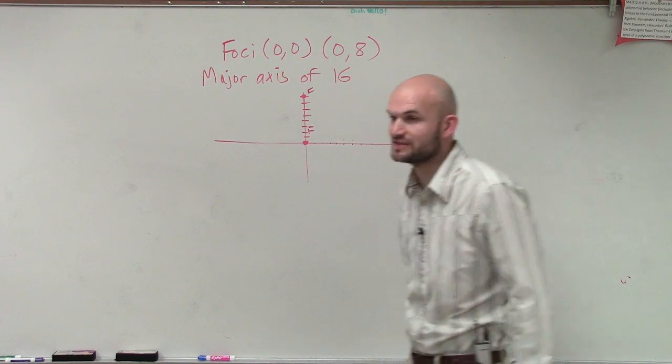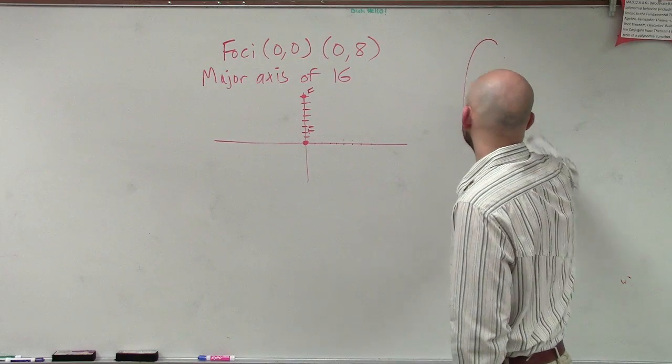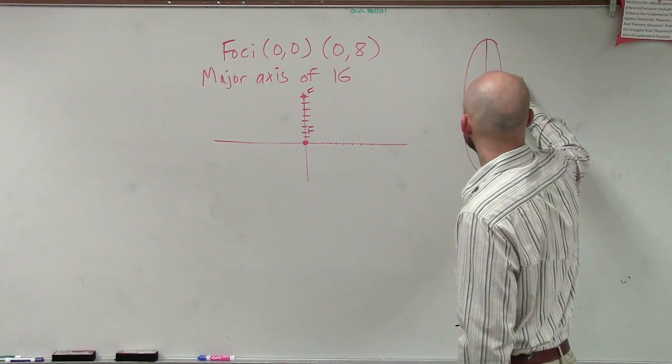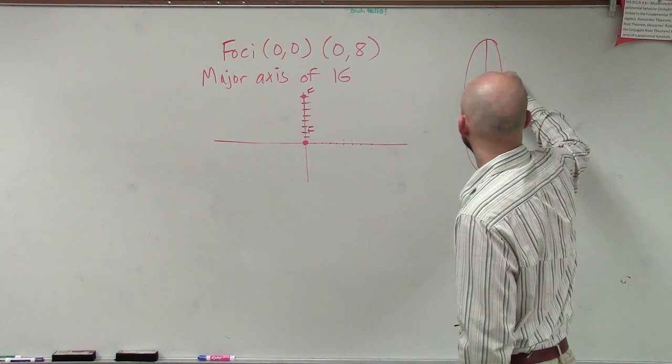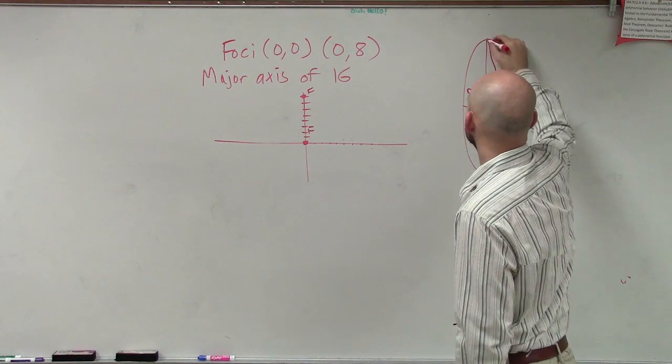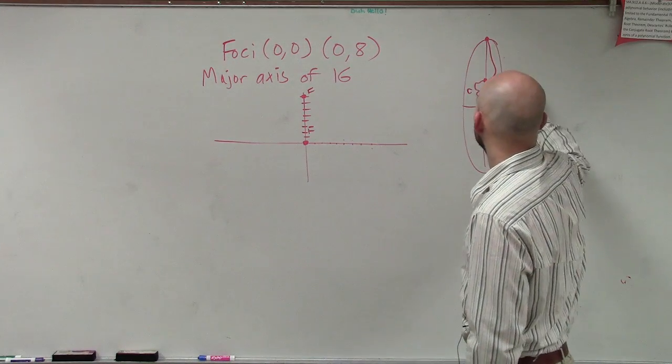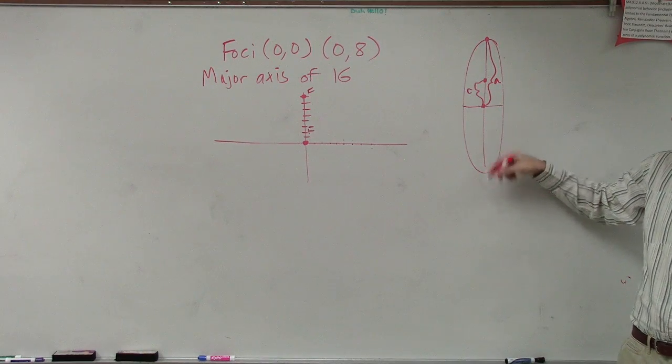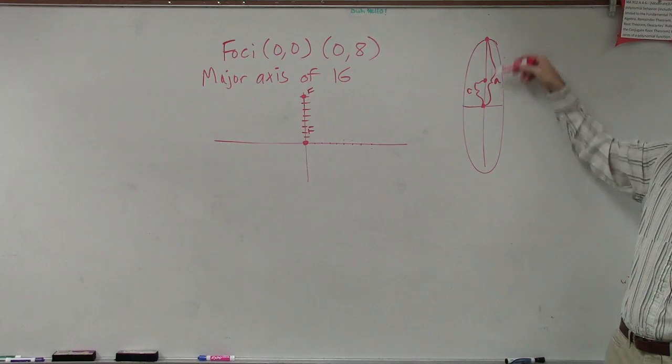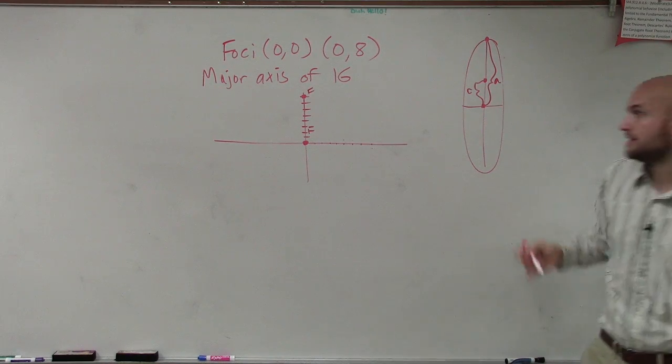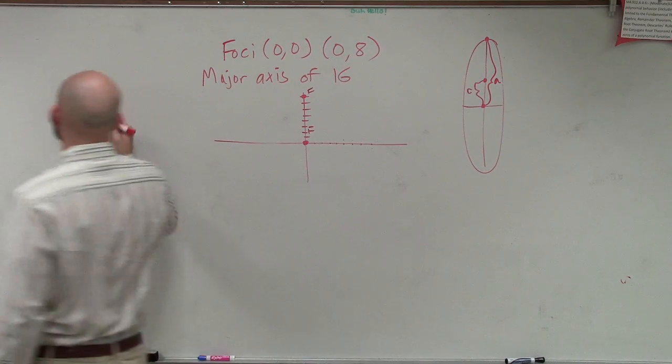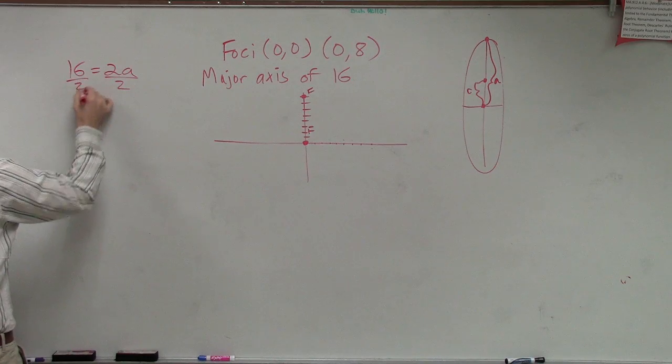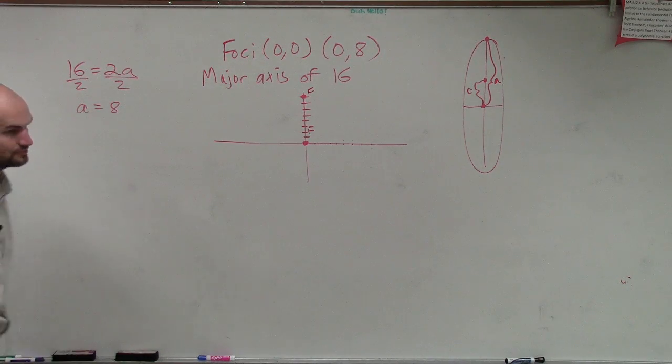Now, it says the major axis length is 16. Do you guys remember, so now we have an ellipse that looks something like this. We know that the distance to our foci is C, and the distance to our vertice is A, right? But the whole distance of the major axis is how far? How long? That's 2A, right? So, if I want to figure out what A is, I can just say 16 equals 2A, divided by 2, A equals 8.